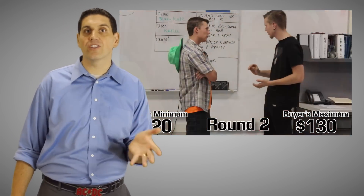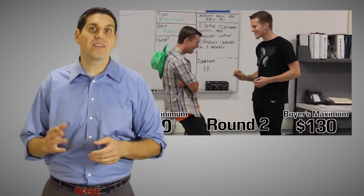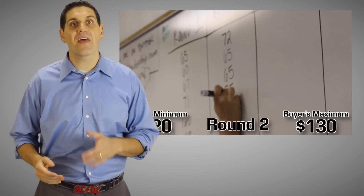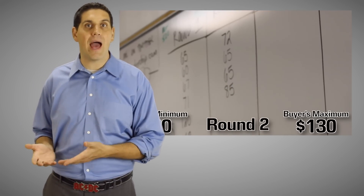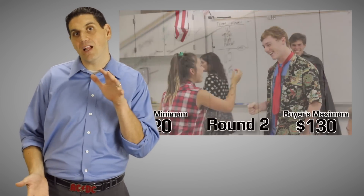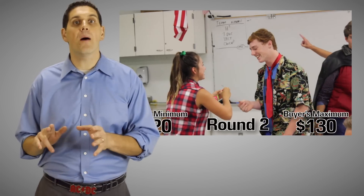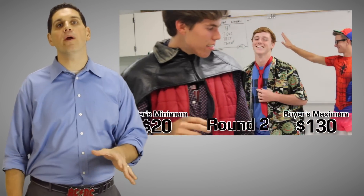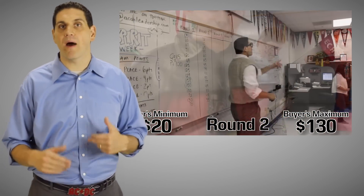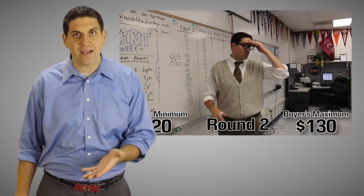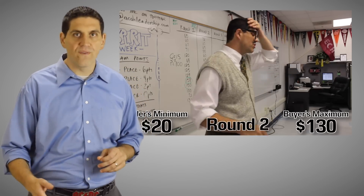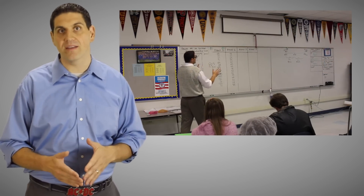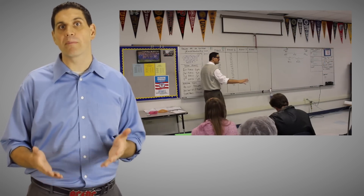In round two, we do it over again, except the buyers are now sellers with a pearl and the sellers are now buyers. Again, we keep track of everyone's numbers. At the end, we analyze what happens, and the price starts to get closer and closer toward an equilibrium — the numbers converge and there are fewer outliers. At that point, I talk to the students about equilibrium and explain that if we kept doing this activity over and over, eventually we'd arrive at an equilibrium price and equilibrium quantity.